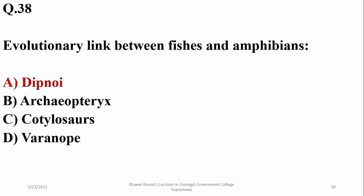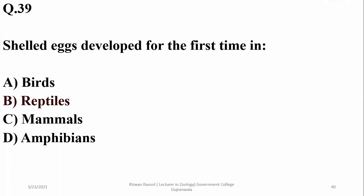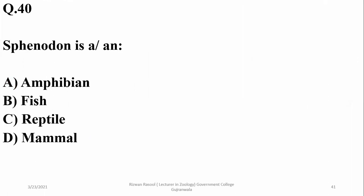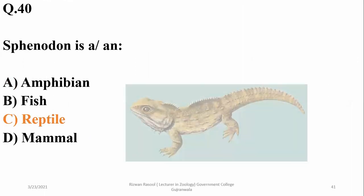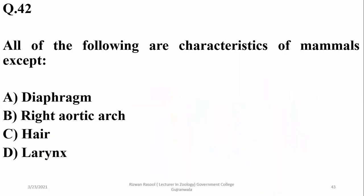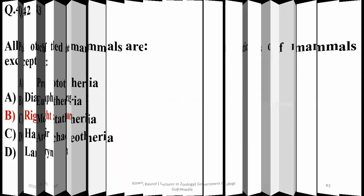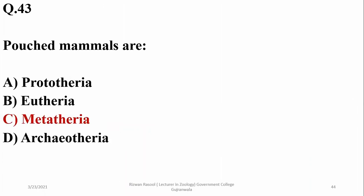Question thirty-one: Archaeopteryx is a link between reptiles and birds. Shelled eggs developed for the first time in reptiles and were later also observed in birds. Sphenodon is a reptile — so charlie. Question thirty-two: teeth are not found in birds. Question thirty-three: the right aortic arch is absent in mammals — they have only a left aortic arch. Pouch mammals are metatherians — charlie — also known as marsupials.